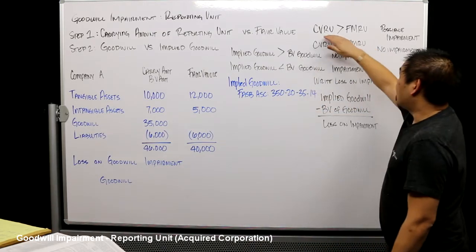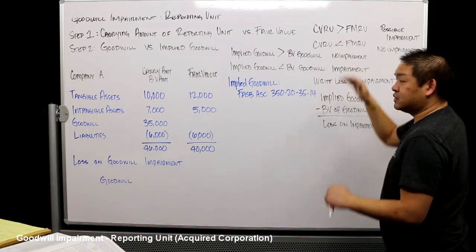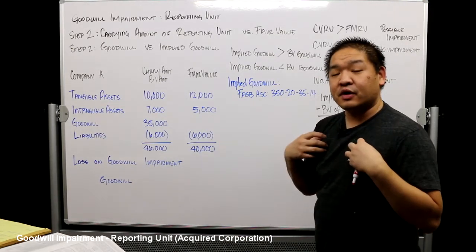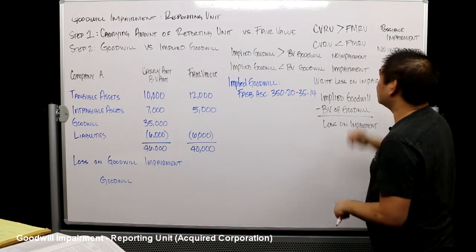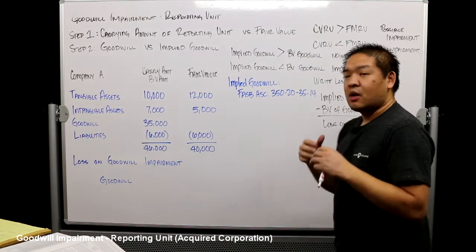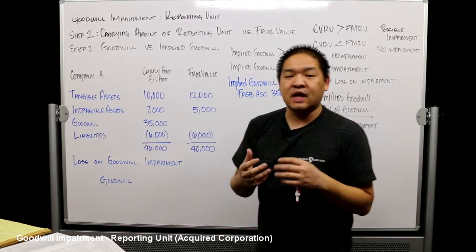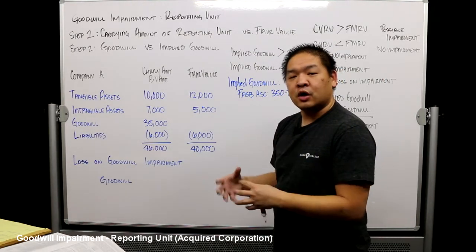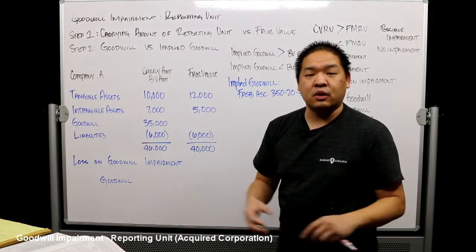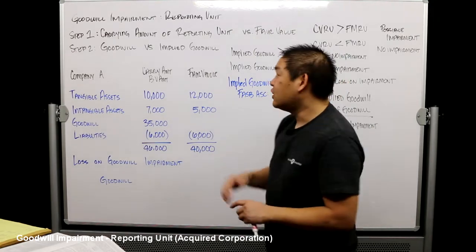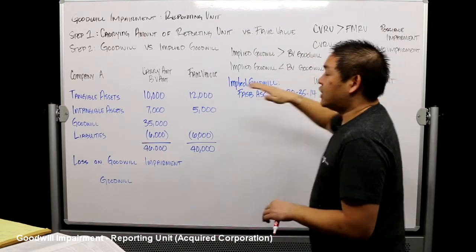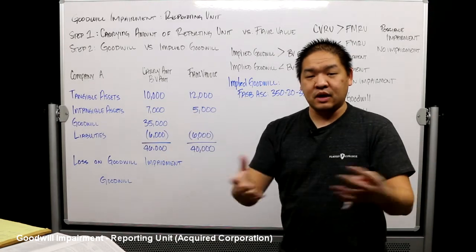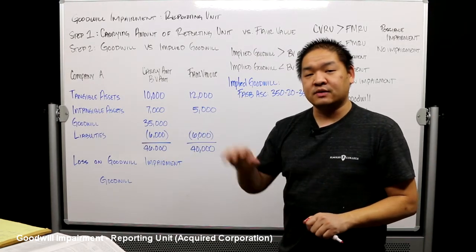If our carrying value is bigger than the fair value — meaning it's worth less to the market than we have it on our books — then we might have a possible impairment. If the fair market value is more than the carrying value, meaning we could get more for it than what's on our books, then we don't have any impairment and we don't need to go to step two — the goodwill is not impaired.